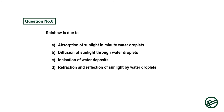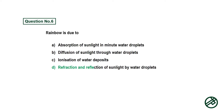Question number six: Rainbow is due to — option A: absorption of sunlight in minute water droplets, option B: diffusion of sunlight through water droplets, option C: ionization of water droplets, option D: refraction and reflection of sunlight by water droplets. Answer is option D: refraction and reflection of sunlight by water droplets.